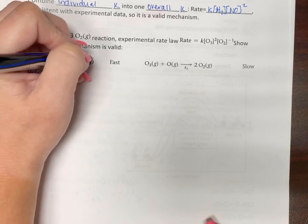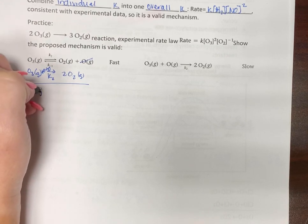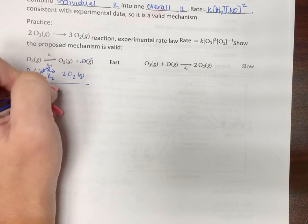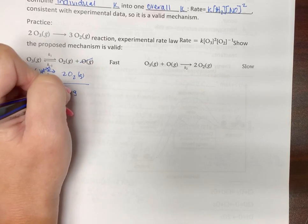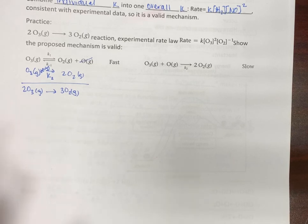So then see here, this oxygen intermediate goes away. So we're left with 2 O3 gas and 3 O2 gas. Okay. So this could work because it adds up to the overall equation.